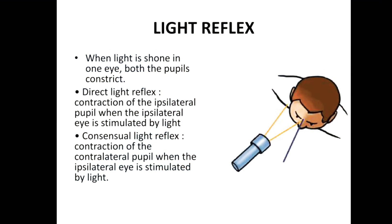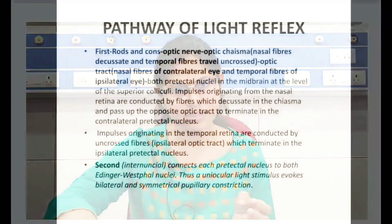Now let us go through the light reflex. As discussed earlier, the light reflex is the response of our pupils when a torchlight is shined in front of the eye. The direct reflex is the constriction of the same eye's pupil in front of which the light has been shined, and the consensual reflex is the constriction of the other eye's pupil.